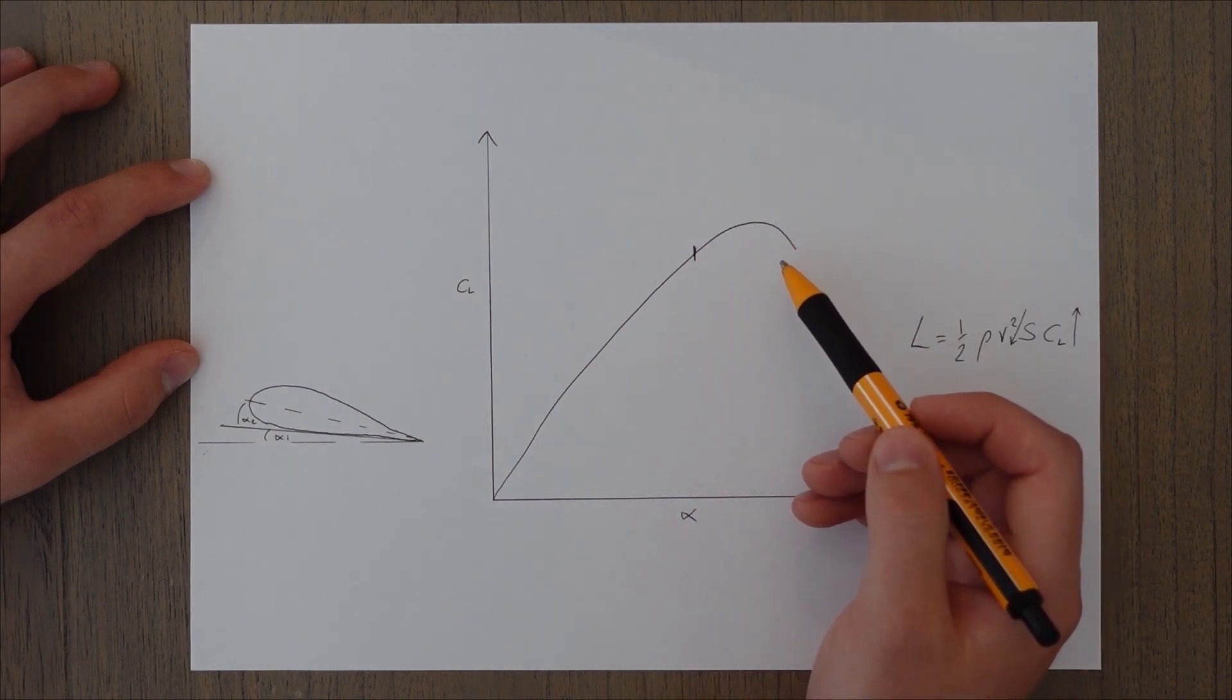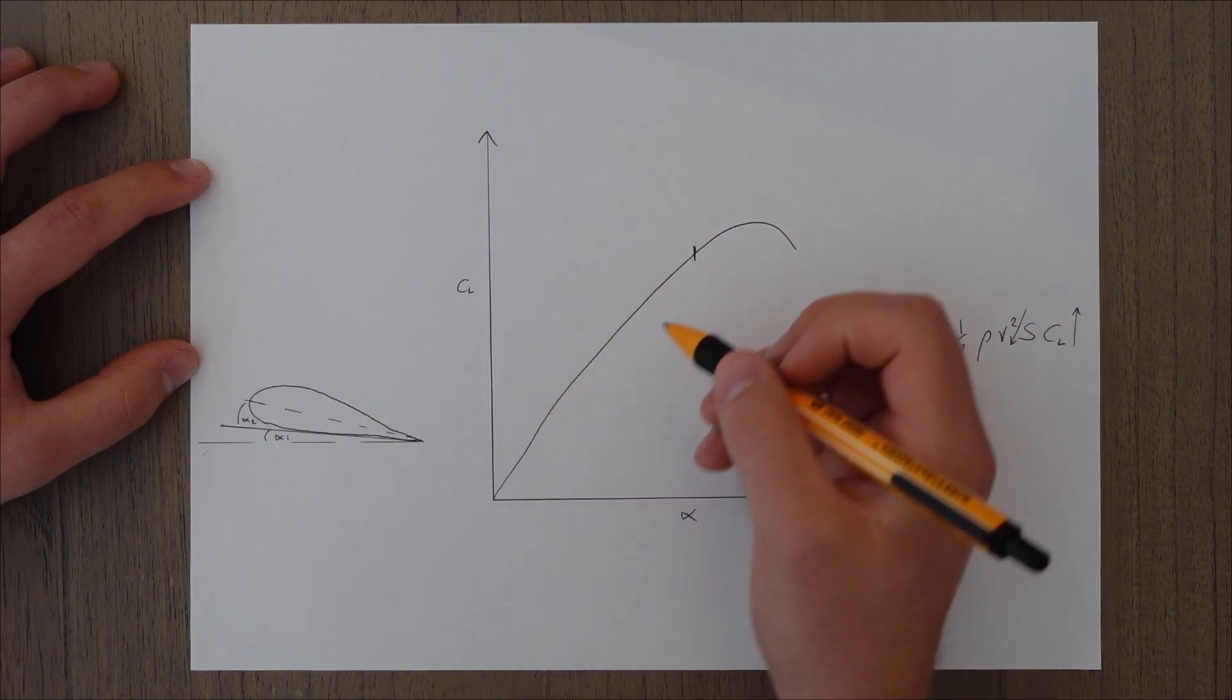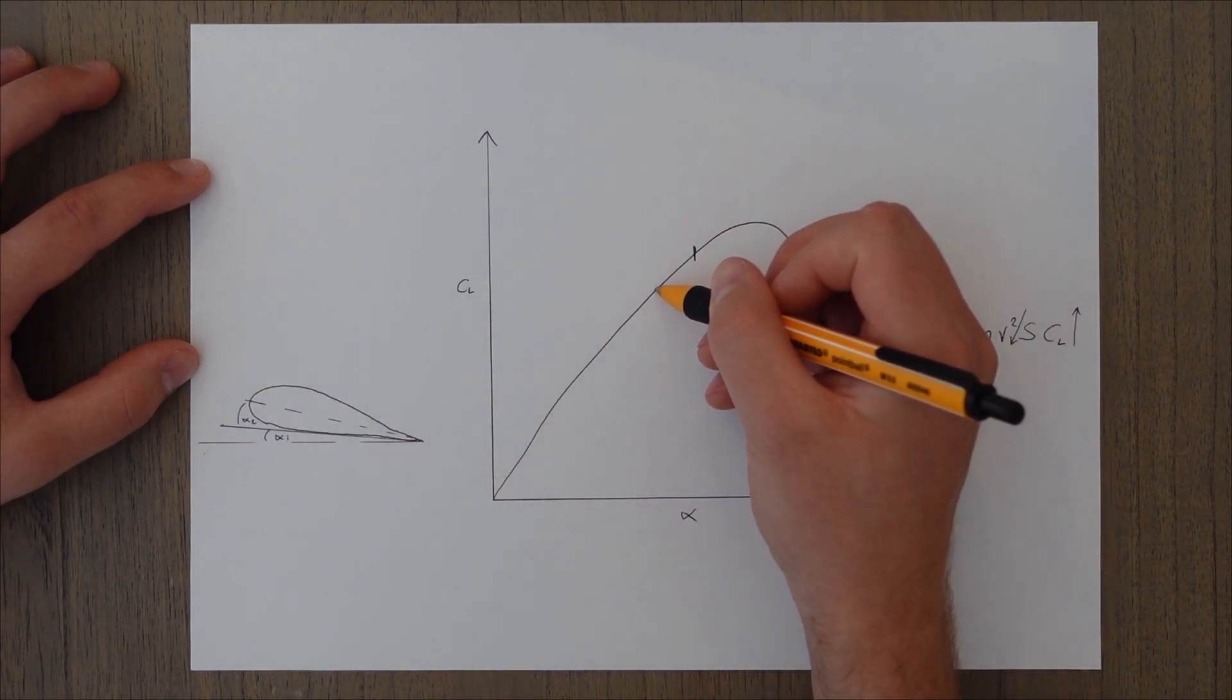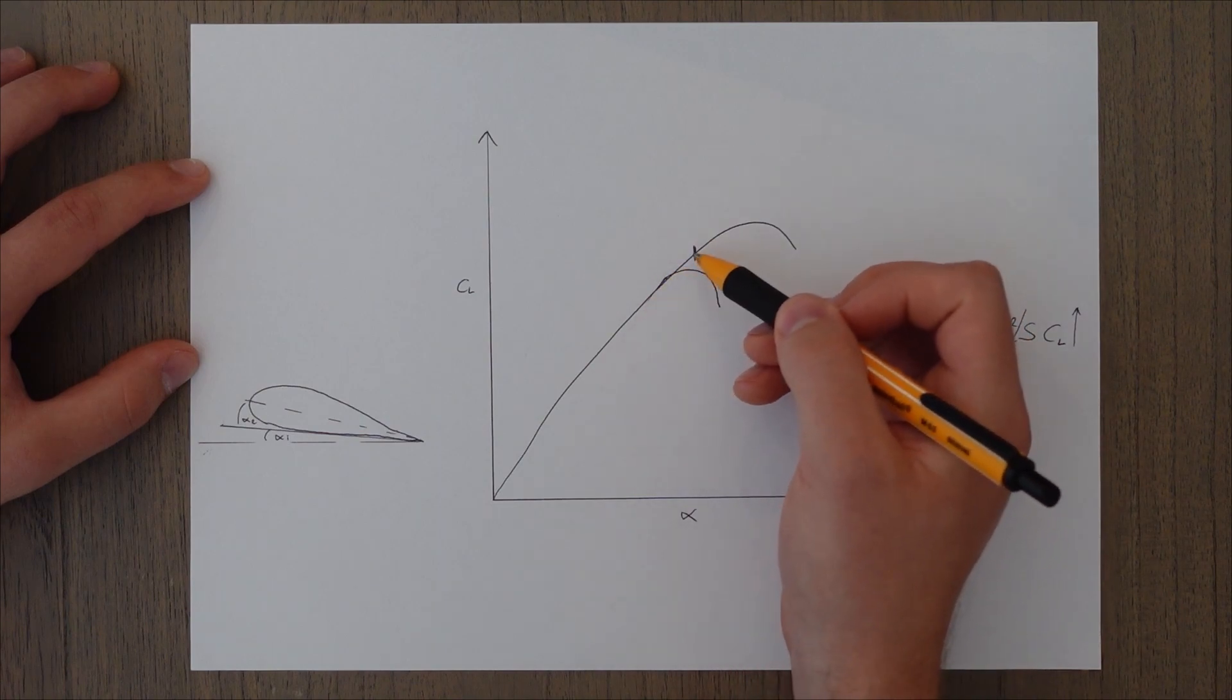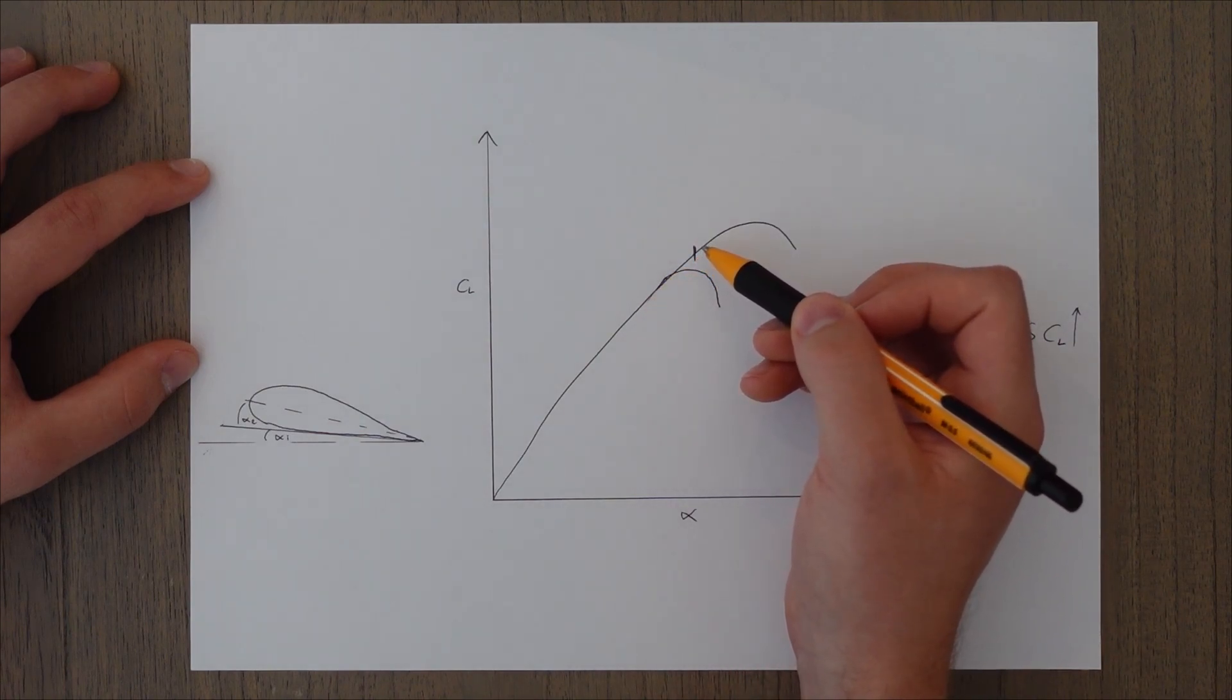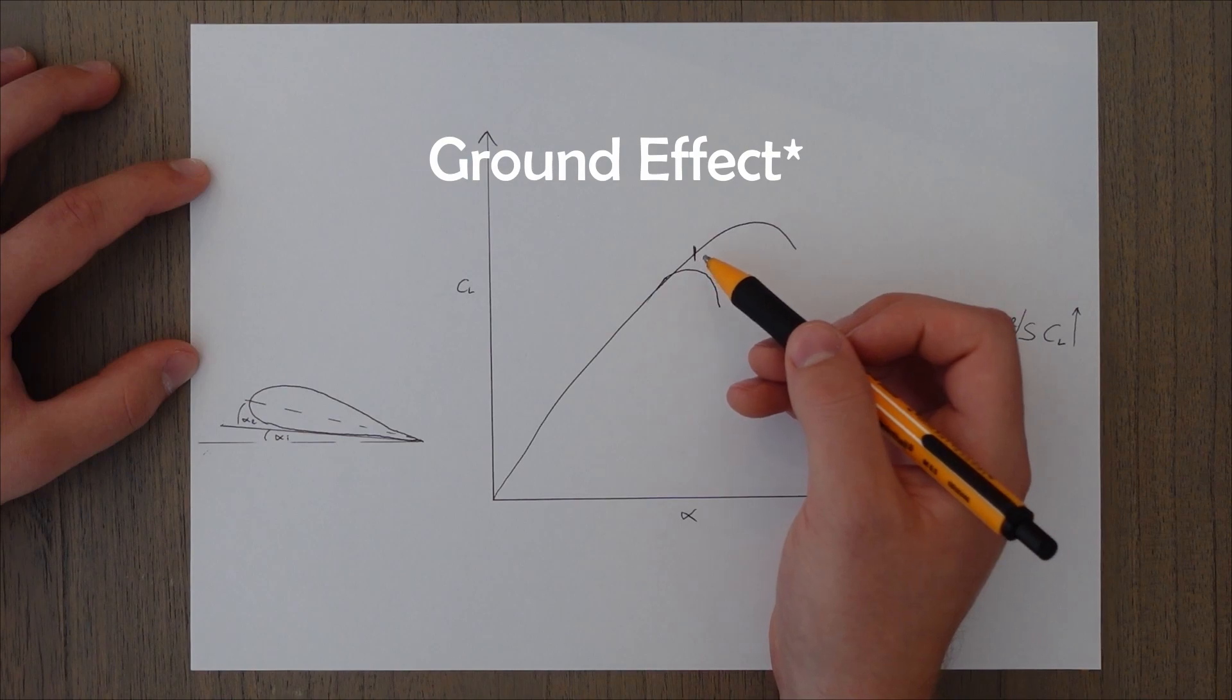So what you can have happening is this graph actually shortening, and you get something along the lines of this. So your previous angle that you were at, as soon as you go into ground wash, is no longer good, and you could be in a situation where you've stalled the aircraft.